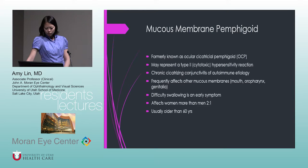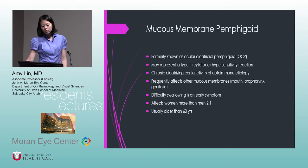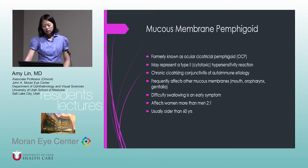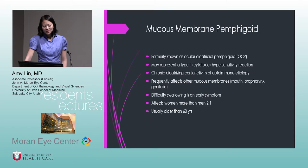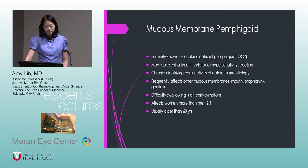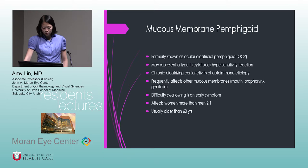Moving to mucous membrane pemphigoid — formerly known as ocular cicatricial pemphigoid or OCP, though many still use OCP because people don't always know what MMP means. This is a type 2 cytotoxic hypersensitivity reaction and a chronic cicatrizing conjunctivitis of autoimmune etiology. It frequently affects other mucosal membranes: mouth, oropharynx, and genitalia. Difficulty swallowing is an early symptom. It affects women more than men in a 2:1 ratio and usually presents in elderly patients.